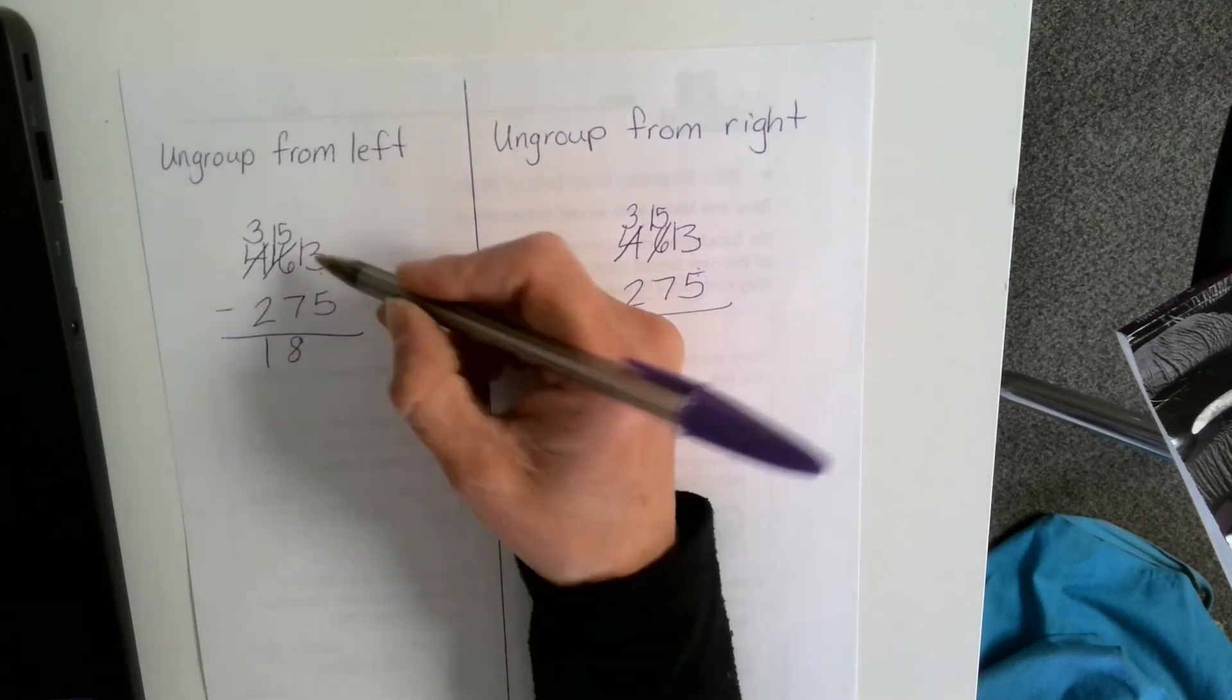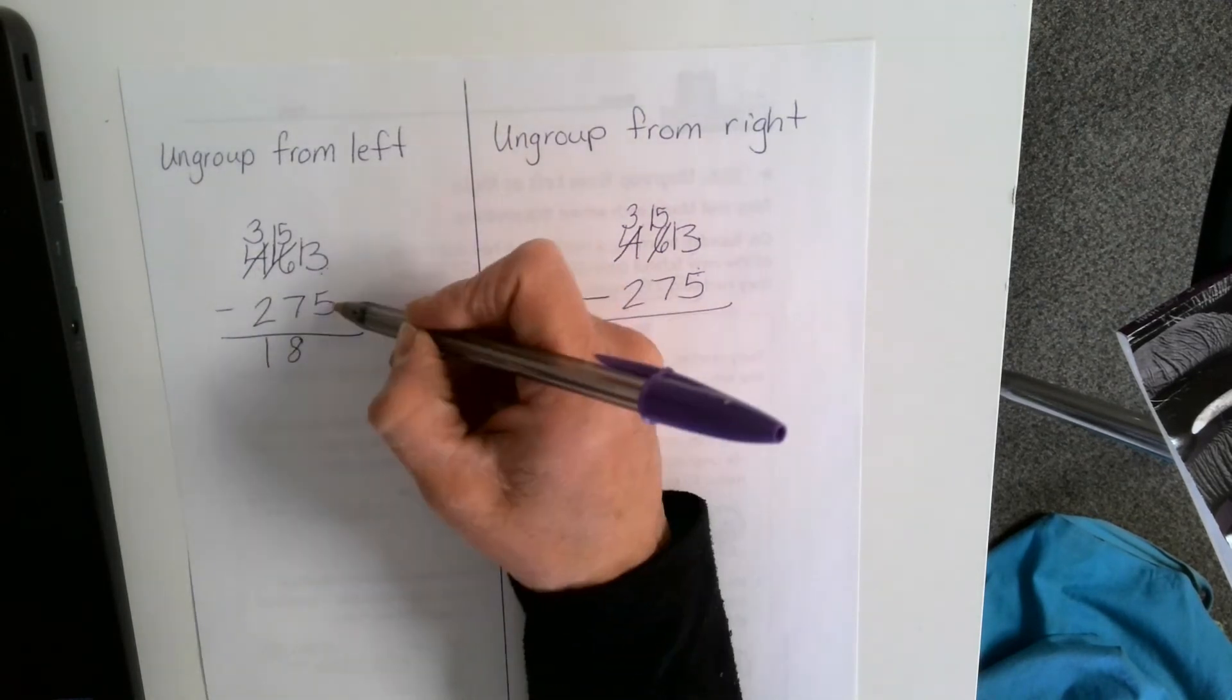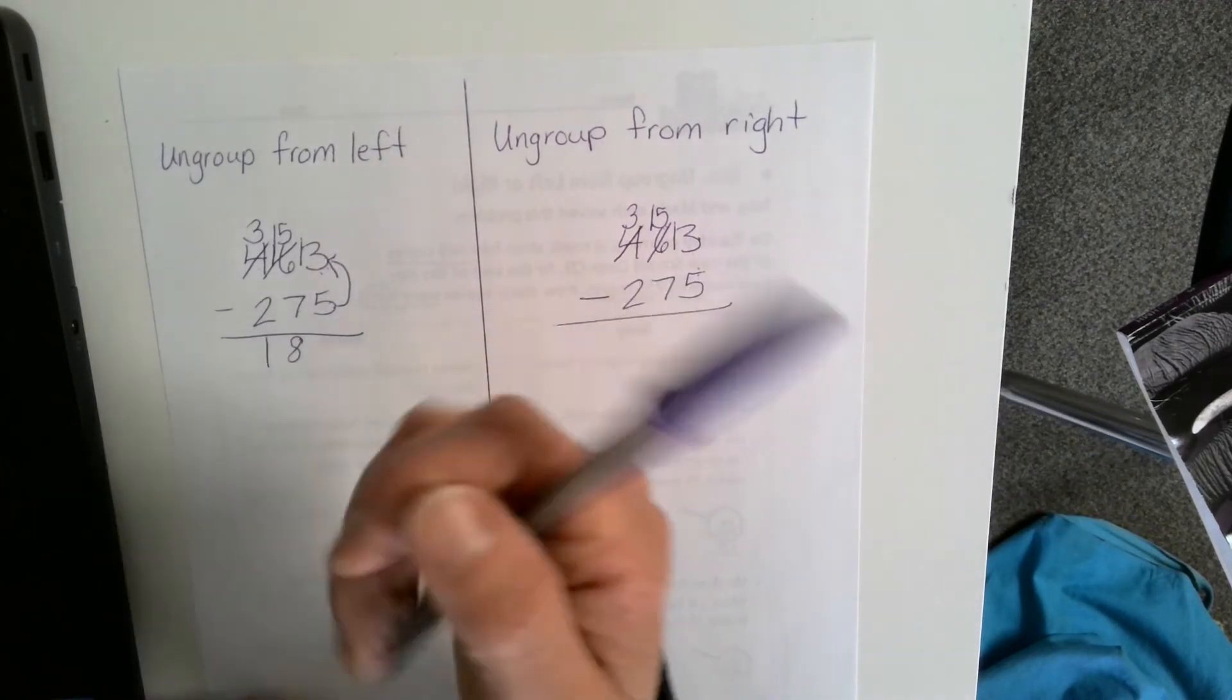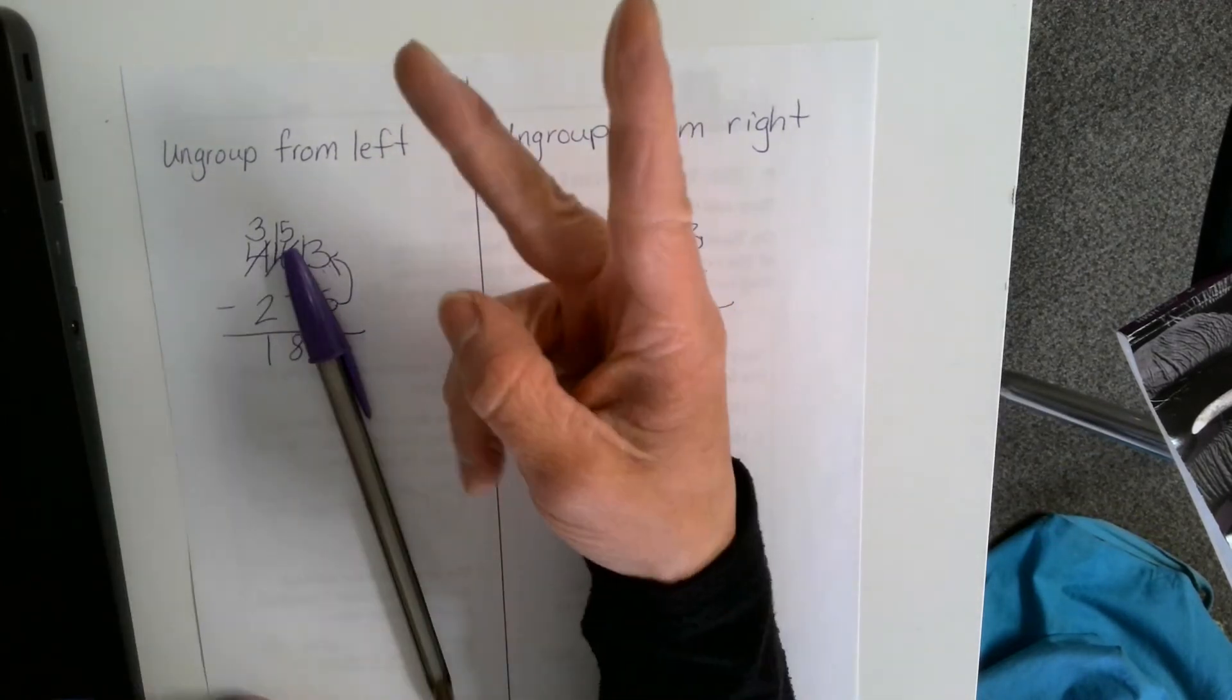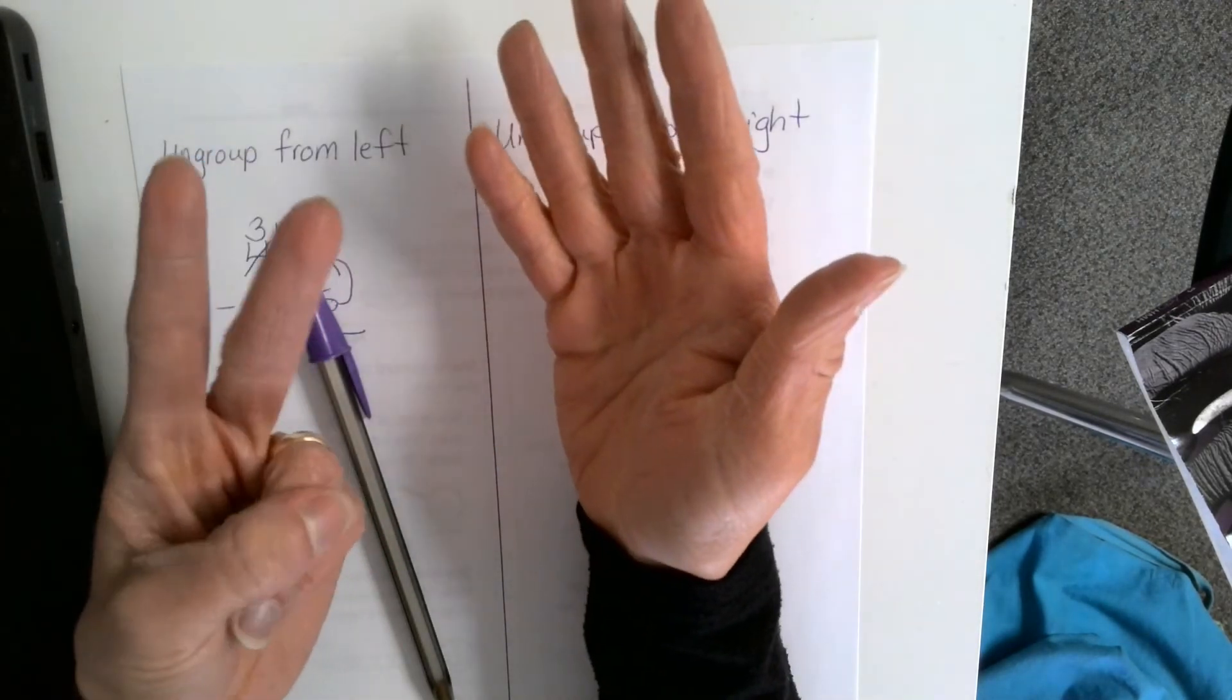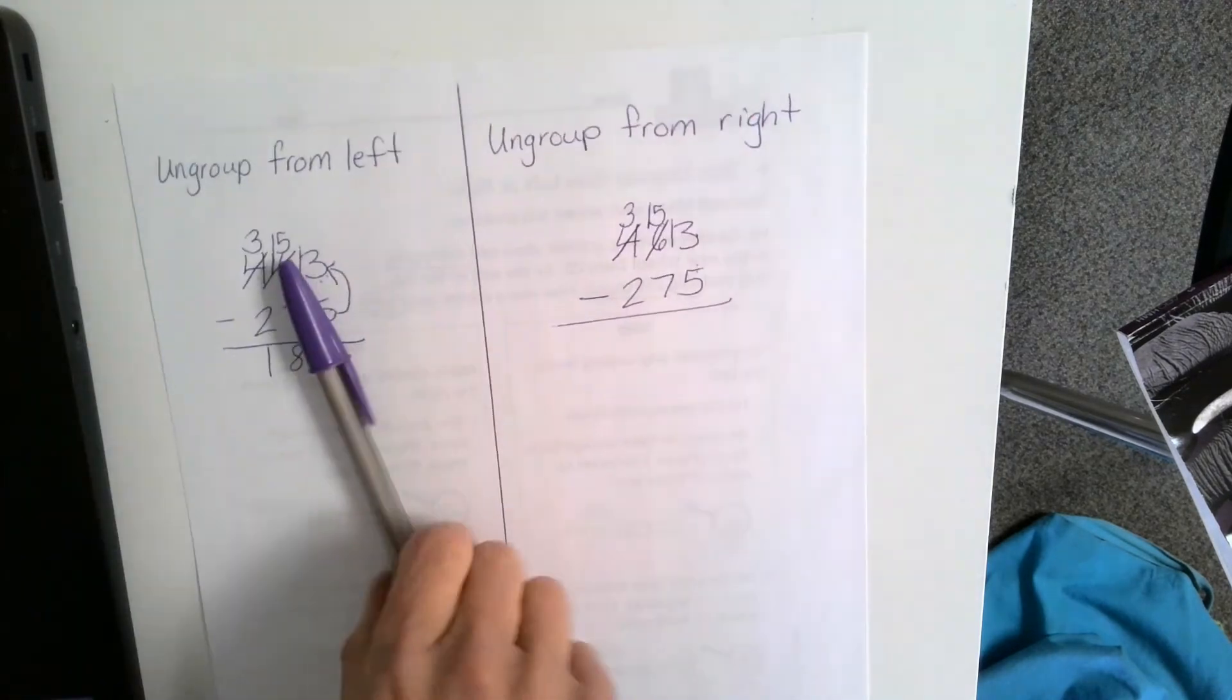And then I can do the same thing with 13 minus 5, starting at 5. Count up to 13. 5 in my head. 6, 7, 8, 9, 10, 11, 12, 13. I see 8 again.